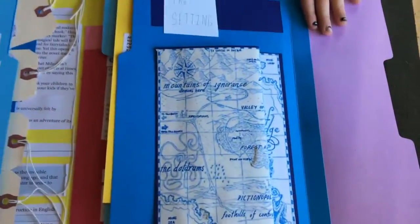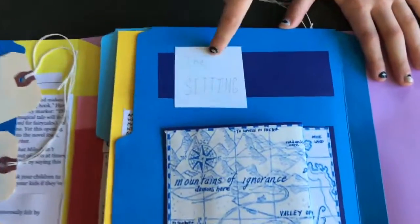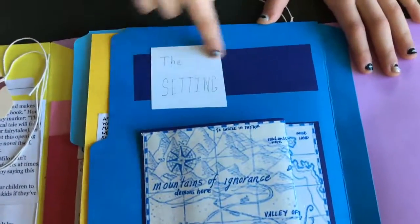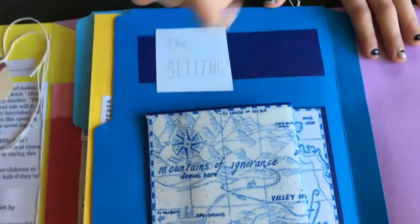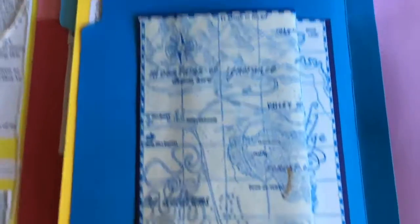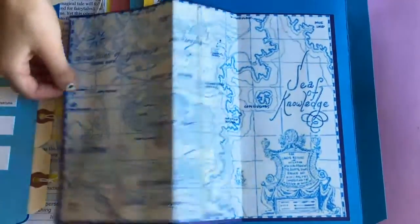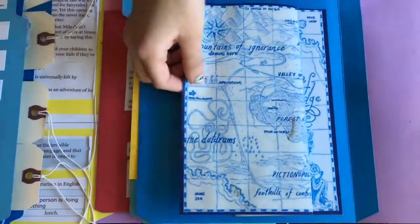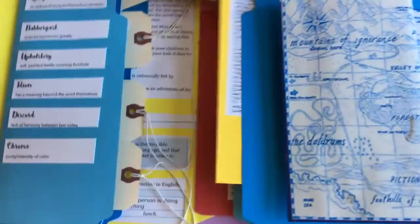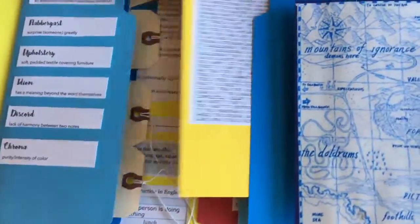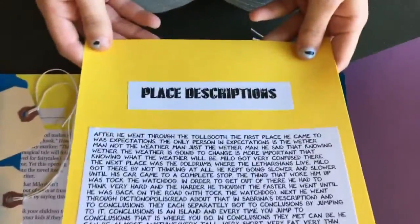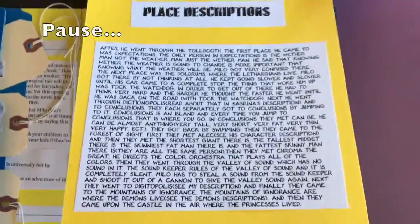Then you open this up and you see Carter's hand-lettered 'Setting' and there's a map of the places that are in the book. When you close that, there's a little pull-out with place descriptions that Carter wrote.